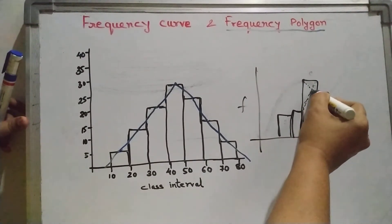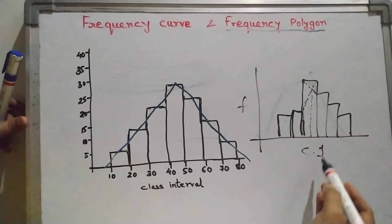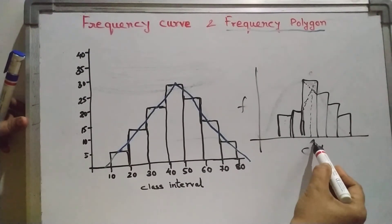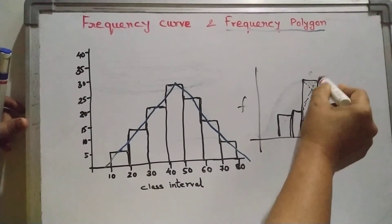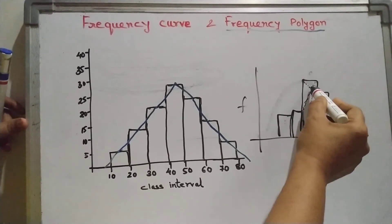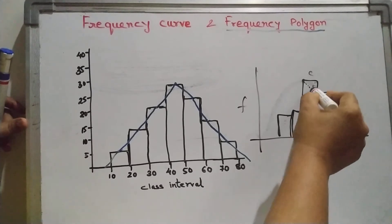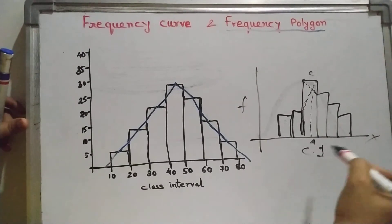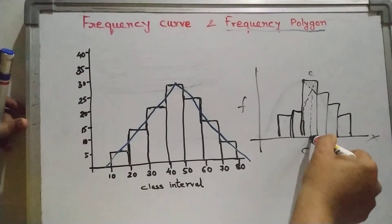From this point C you need to draw a perpendicular down to the x-axis. It cuts the x-axis — suppose at a point A. That point A is your mode value. First you draw the diagonals, then from the intersection point C draw a perpendicular to the x-axis, and where it cuts the x-axis is your mode value.